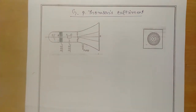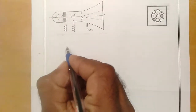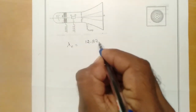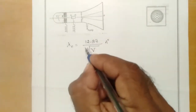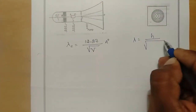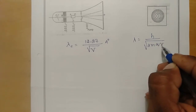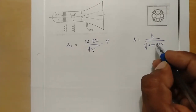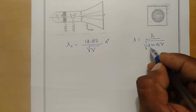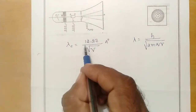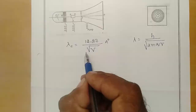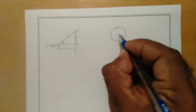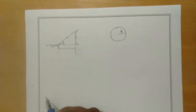Now let us look into the theoretical part of the experiment. The de Broglie wavelength associated with an electron or any charged particle is given by 12.27 divided by the square root of V angstroms. This comes from lambda = h / sqrt(2mqV), where V is the potential difference, q is the charge, and m is the mass of the charged particle. Substituting values for the electron gives 12.27 / sqrt(V) angstroms.